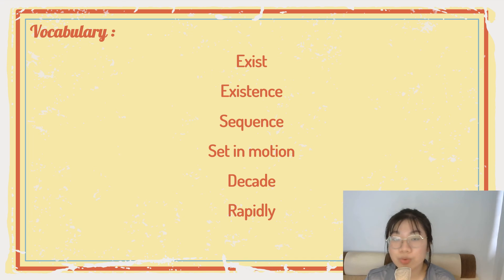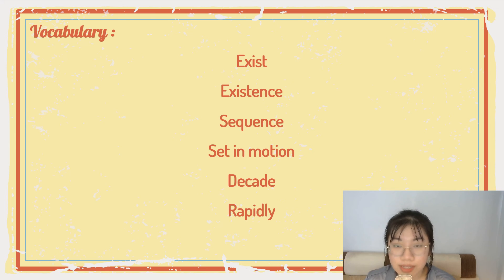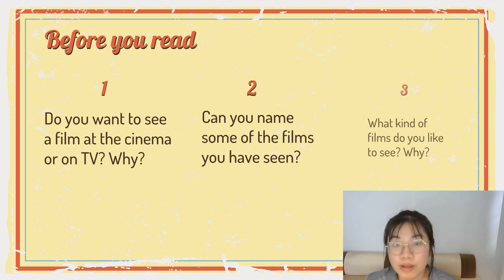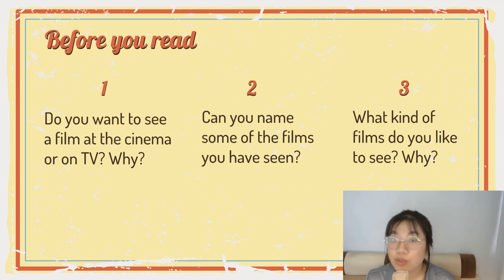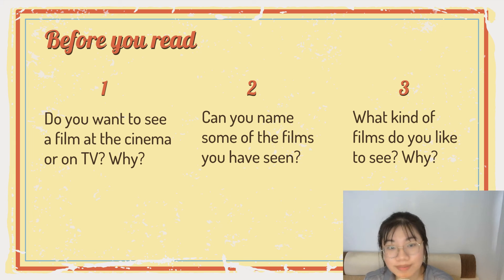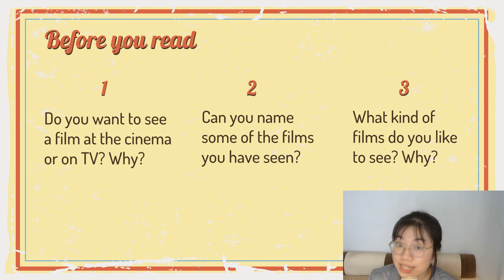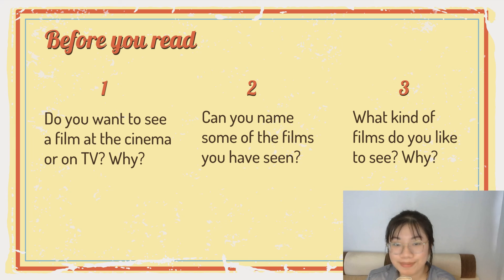So, here are some new words we have learned so far. Before reading the passage, I would like you to ask yourself: Do you want to see a film at the cinema or on TV, and why? Can you name some of the films you have seen? And what kinds of themes do you like to see? Why? And that's it for today. Review the lesson and prepare for the next task. Good luck! Thank you.